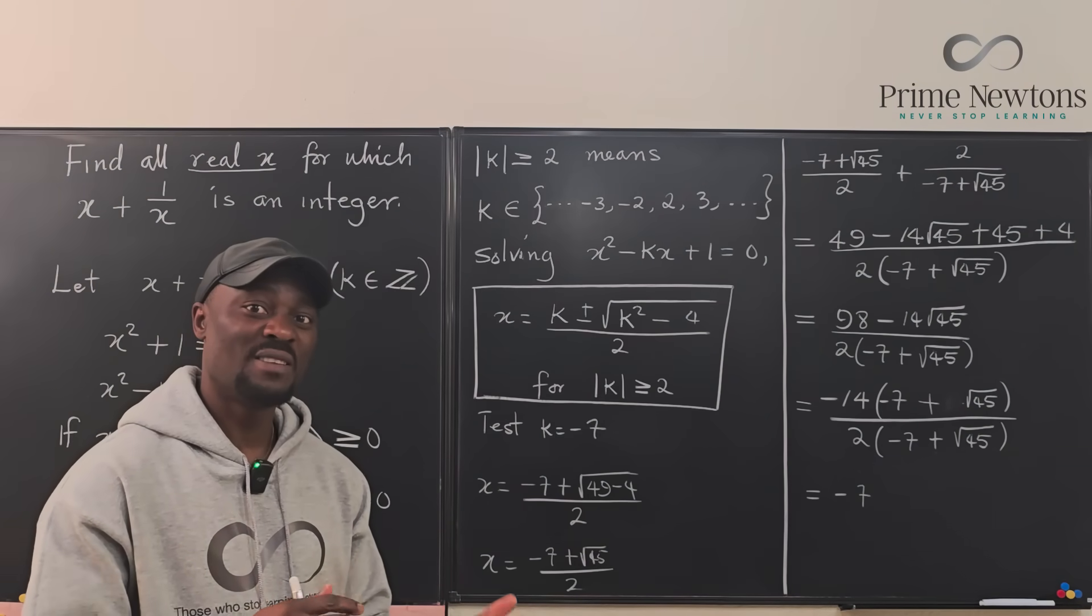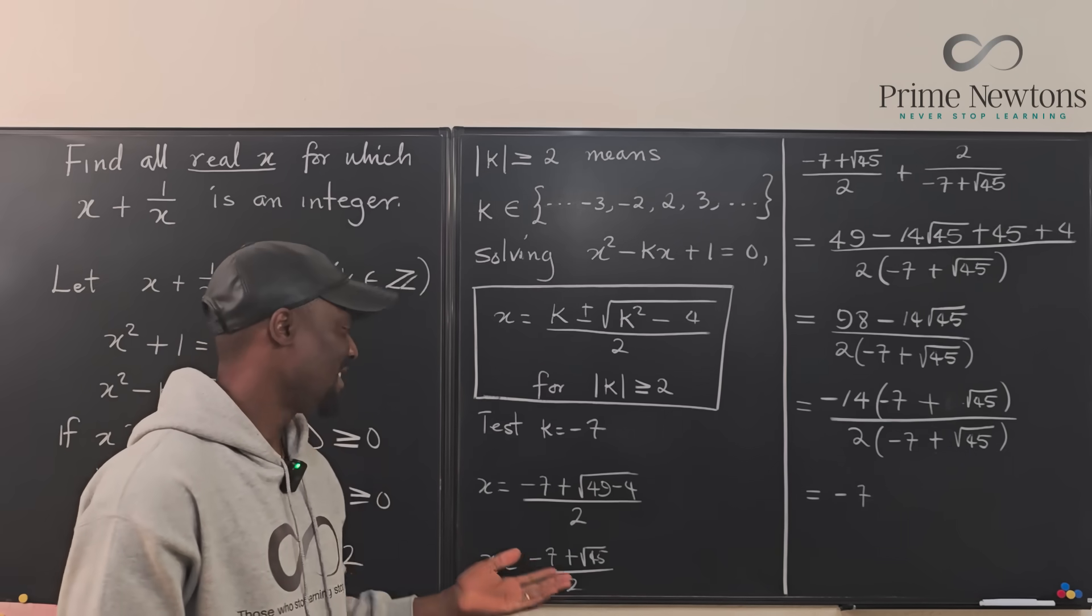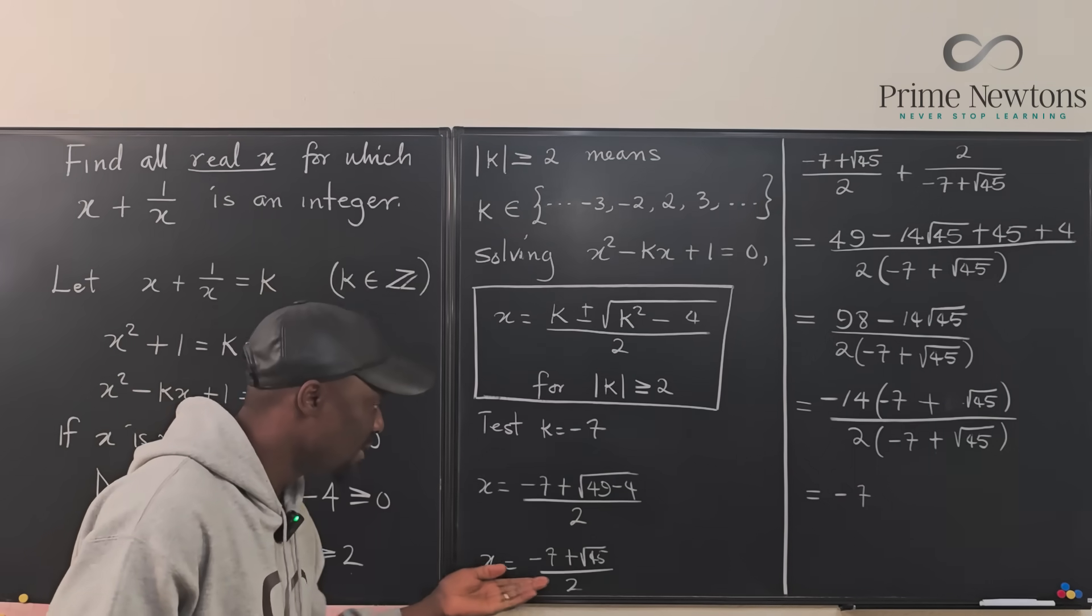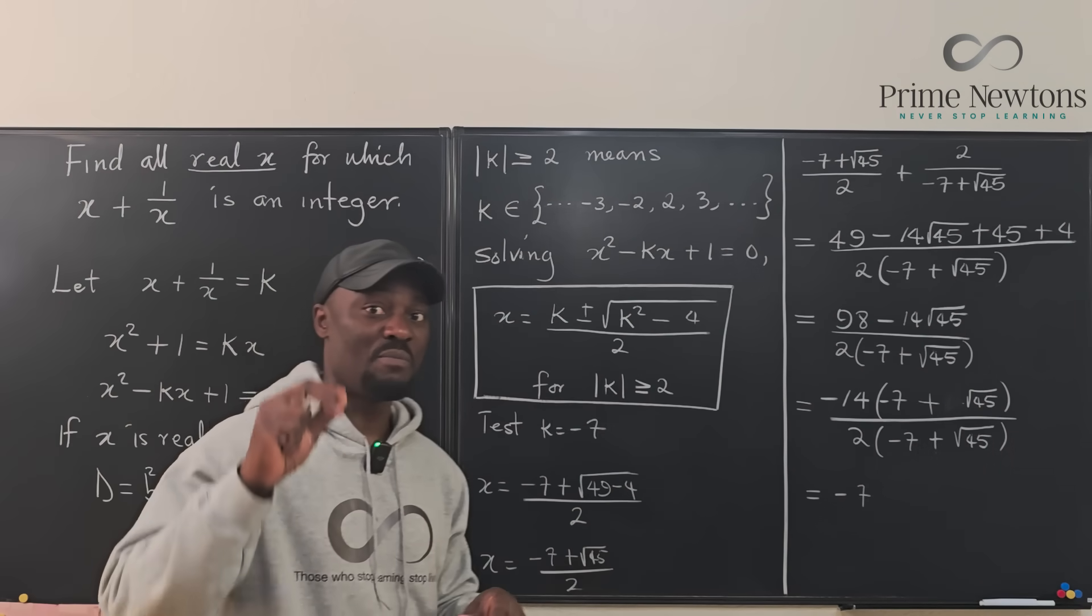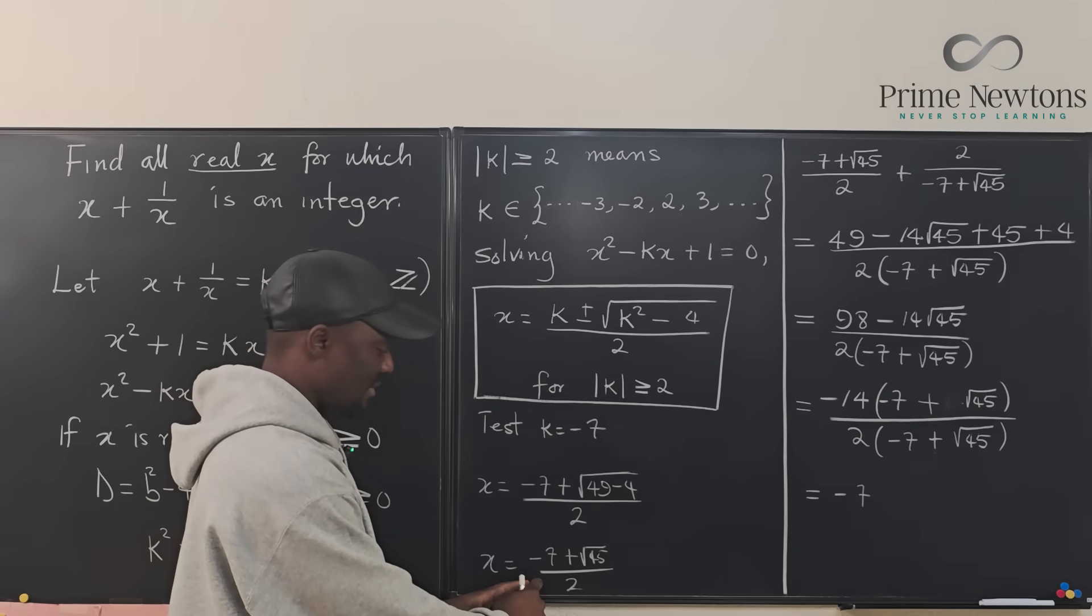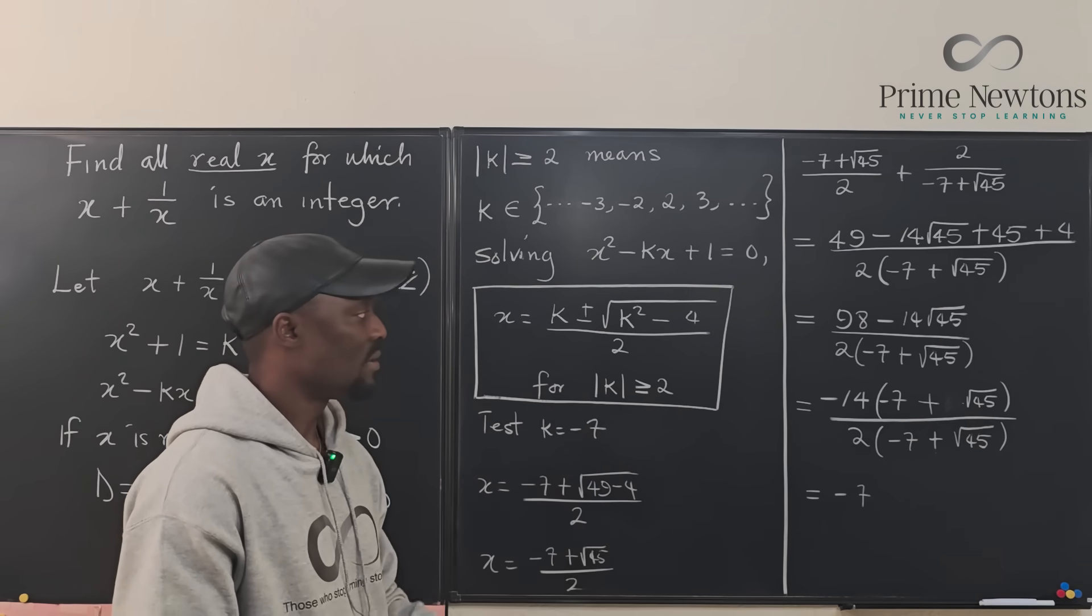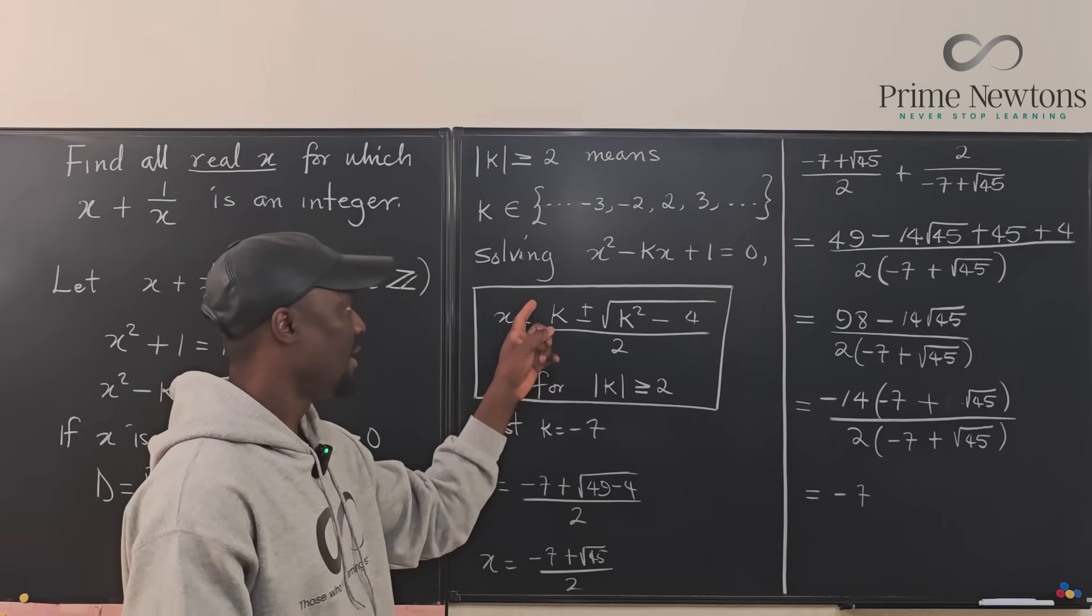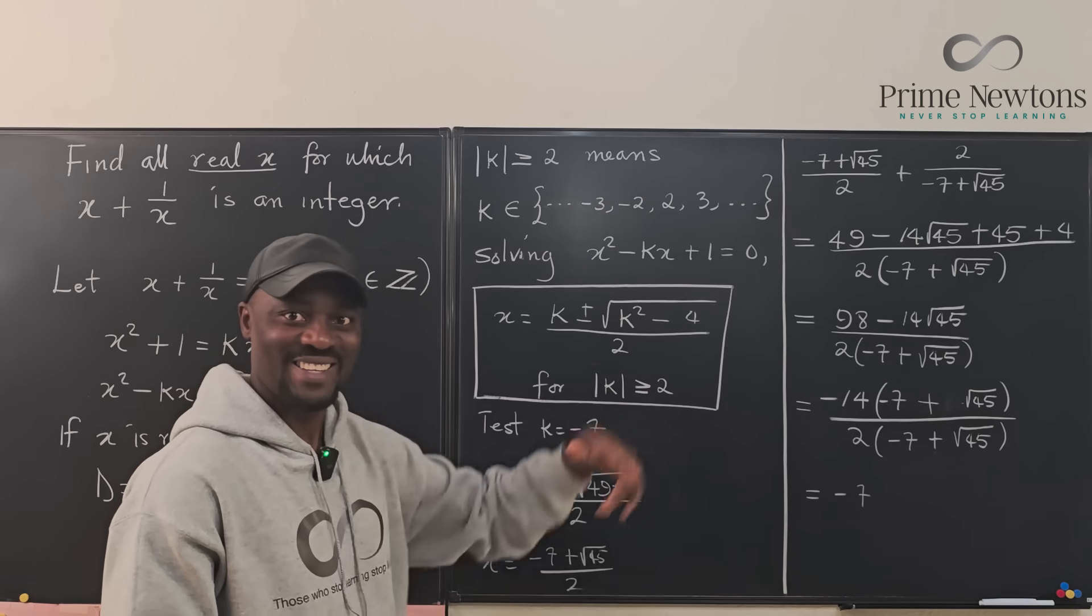You end up with negative 7. It's more like you're reversing the process. Like I said, it's the same thing I would have done if I used any arbitrary k. So at this point, just know that if you pick any number that looks like this, when you add it to its reciprocal, you're going to end up with an integer. And that integer is the number you picked.